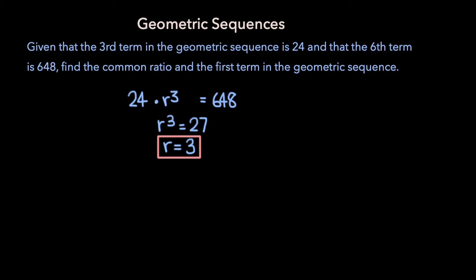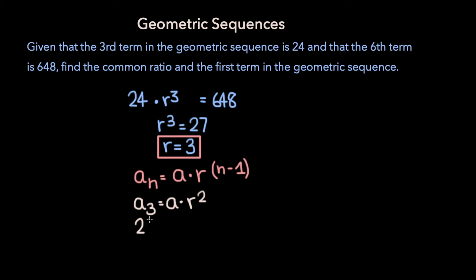Now to find the first term in this geometric sequence, we can use the formula for the nth term, except instead of solving for a sub n, we're solving for a, the first term. I'm going to work with the third term for this solution, but you can also pick the sixth term — as long as you stay consistent, your solution should be correct. We know that a sub 3 is equal to a times r to the 3 minus 1, or second power. The problem tells us the third term is 24, so 24 is equal to a times r, which we found was 3, squared. 3 squared is 9, so dividing both sides by 9, we get a is equal to 24 over 9, which simplifies to 8 over 3. So 8 over 3 is the first term in this geometric sequence.